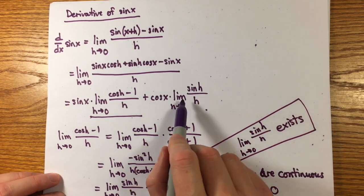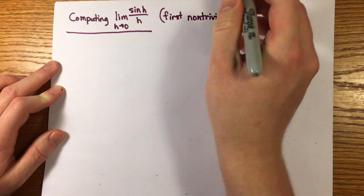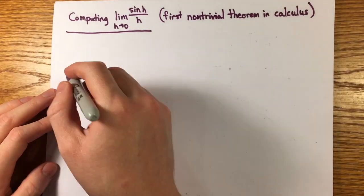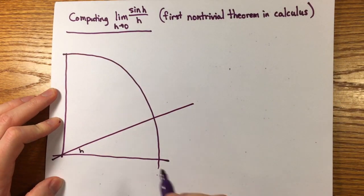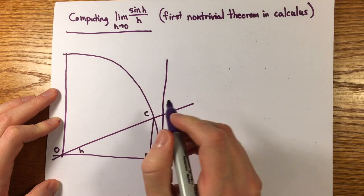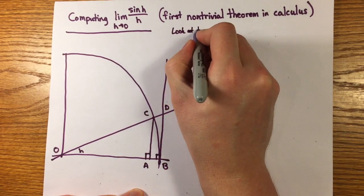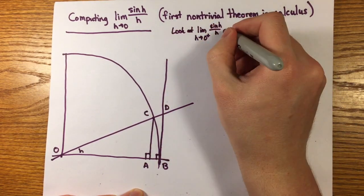So, the real issue is to evaluate this limit, sine h over h, as h goes to 0. I'd say this is usually the first non-trivial theorem proven in a calculus class. This is where the interpretation of the argument to sine as a length really matters. To compute this limit, we have to make a comparison using geometry.